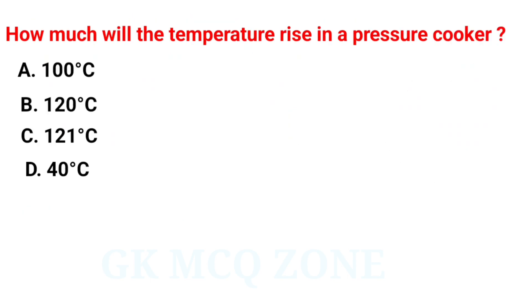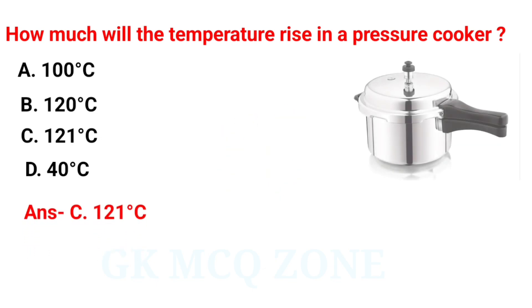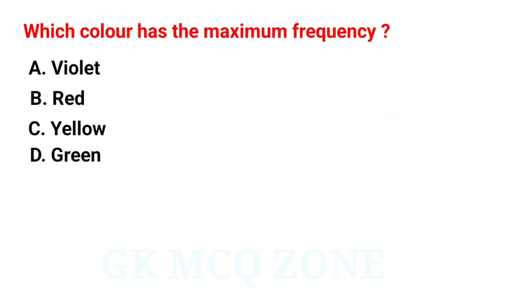How much will the temperature rise in a pressure cooker? The correct answer is option C: 121 degrees centigrade.